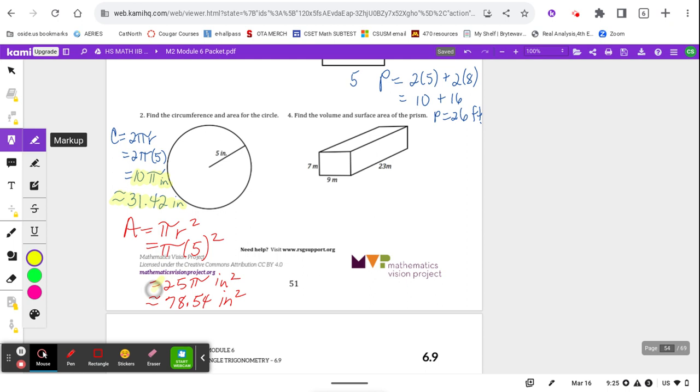So again, why the two answers? We've got the exact answer, 25 pi square inches. And then we've got the approximate rounded answer, 78.54 square inches.